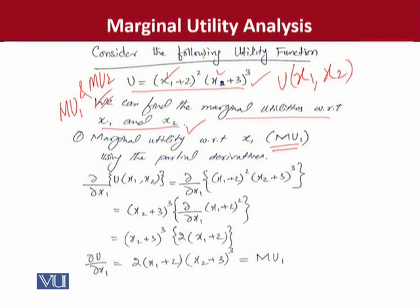So what should be the tool? The tool is the partial derivative. We will use the partial derivative with respect to x1 for MU1. You can see that we have taken the partial derivative with respect to x1, and the solution follows the standard rules. Where we have taken the derivative with respect to x1, x1 is differentiated, while x2 is treated as a constant.